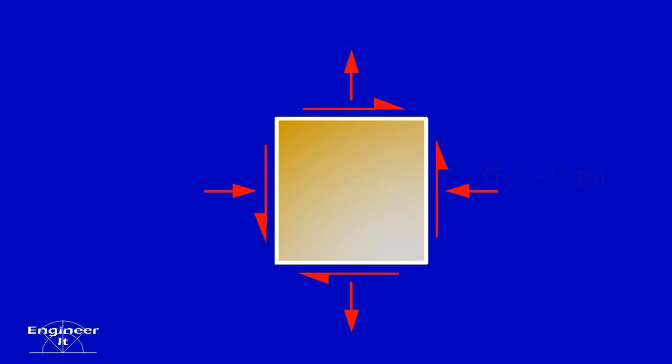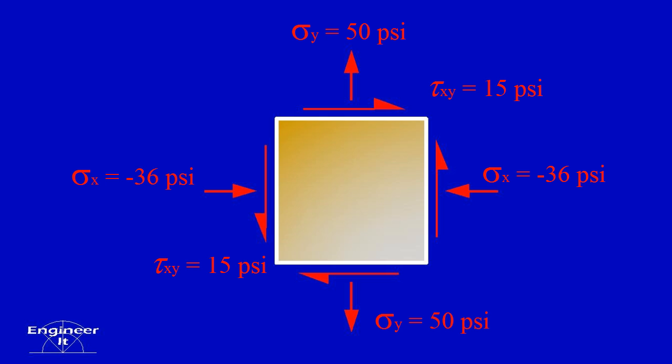Moving on, let's assume that this element is subjected to a normal stress in the x-direction of negative 36 pounds per square inch. Remember that negative is compression, which is opposite of the positive sign convention. The normal stress in the y-direction is equal to 50 pounds per square inch, and the shear stress on the x-y plane is equal to 15 pounds per square inch. Both of these are positive because they are in the same direction as the positive sign convention. Notice that the stresses on the opposite sides of the element are equal and opposite in order to maintain equilibrium.